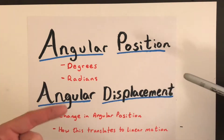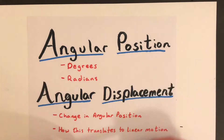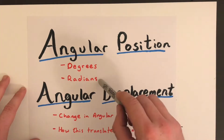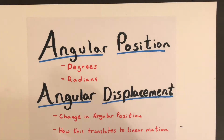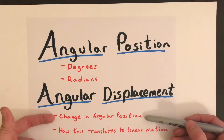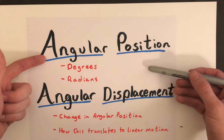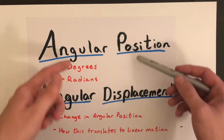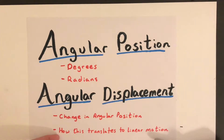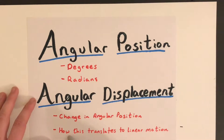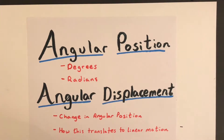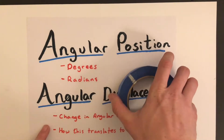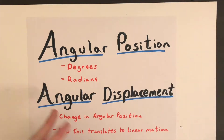Angular position can be measured in two different ways: degrees and radians. We'll talk about both, but radians is really the one we're going to use, so we'll go in depth on what a radian is. Angular displacement is essentially just the change in angular position — how far it has moved from where it started — and we'll also cover how to translate angular displacement into linear motion, such as how far something has rolled.